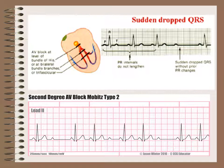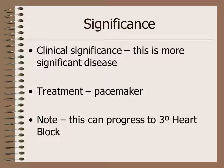The clinical significance of Mobitz type 2 second degree heart block: it is clinically significant as the disease occurs in the bundle of His. Usually the patient is treated with pacemaker implantation, and it can easily progress to third degree heart block.